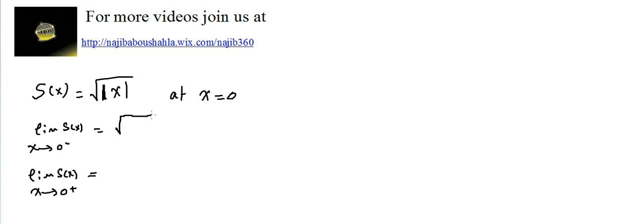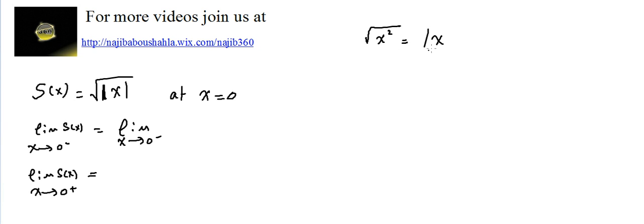This is the radical. Now, as x approaches 0 minus, this means x is negative. Let me mention it again: if we have radical x squared, it does not equal x. It is equal to the absolute value of x, because it's a square root. Outside the square root, the result is a positive number, so this should always be a positive number.